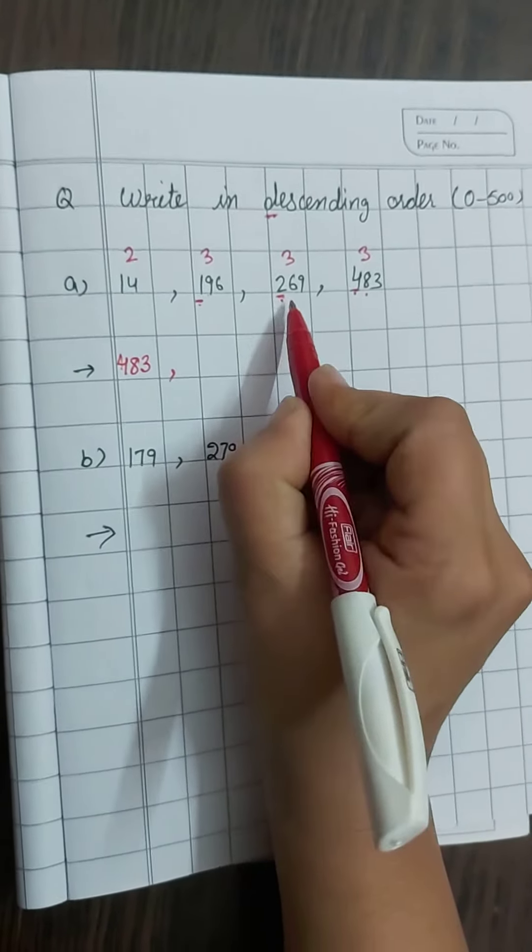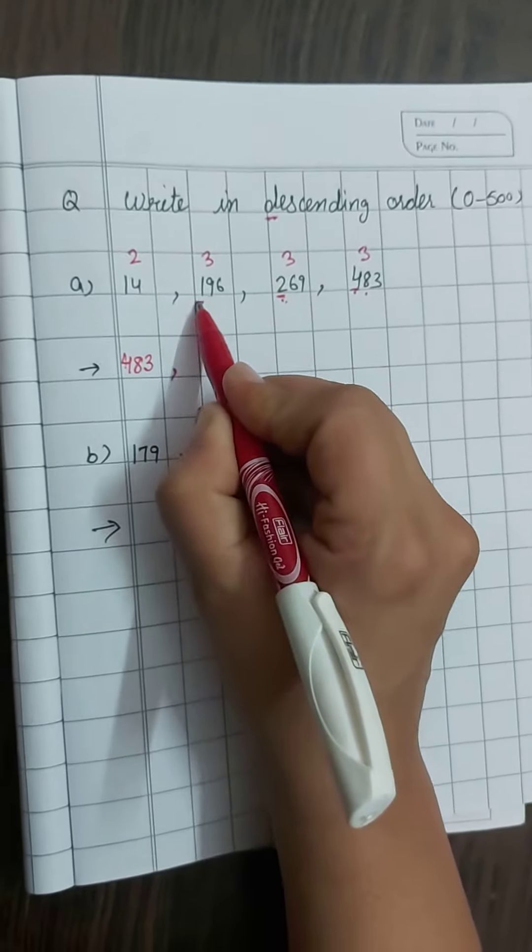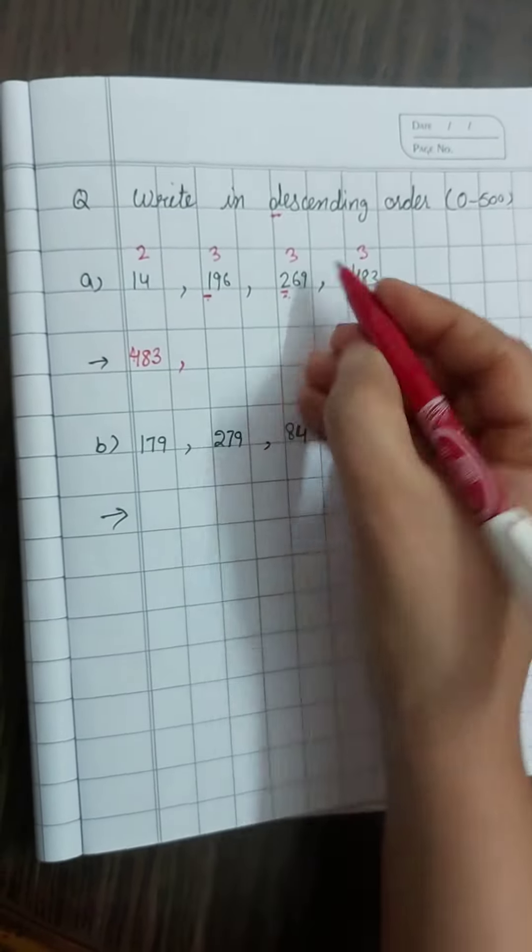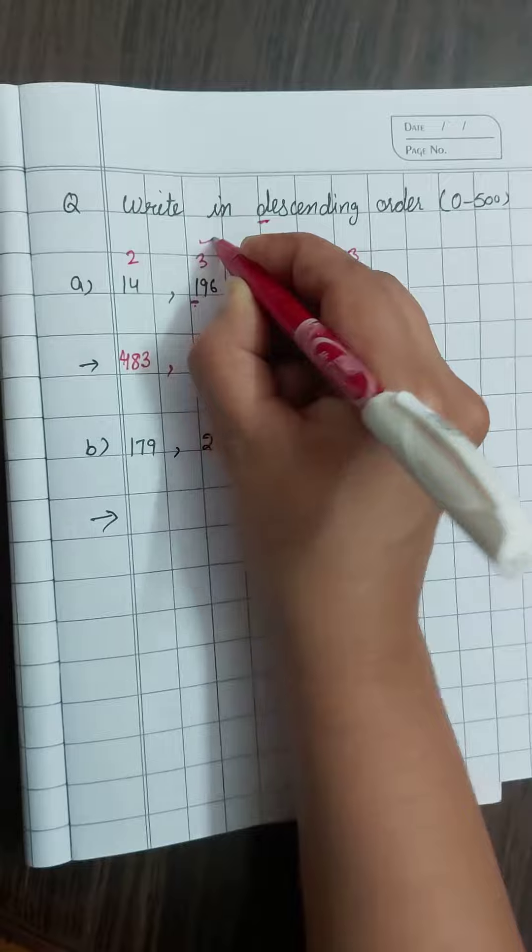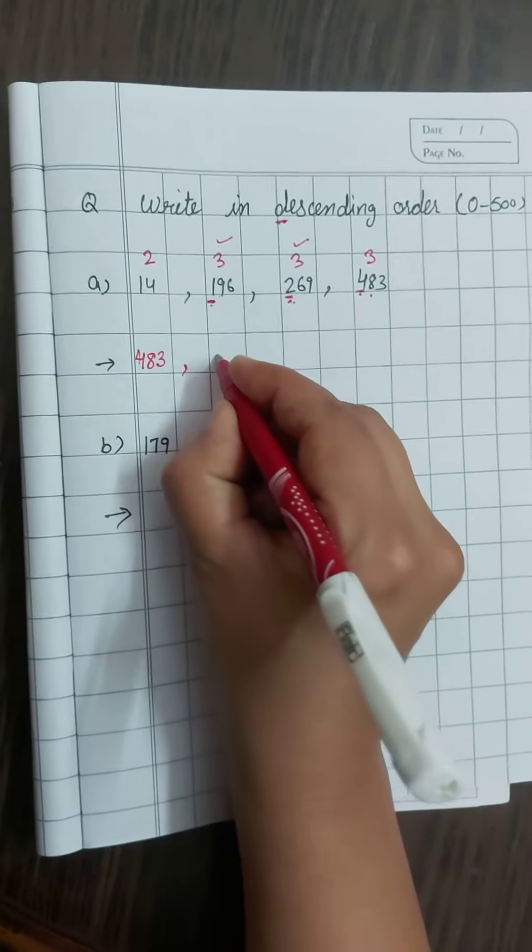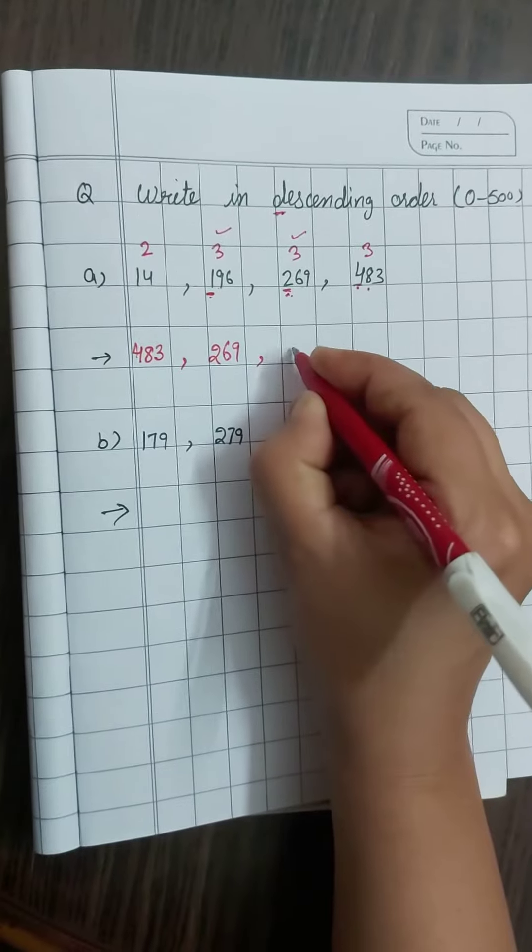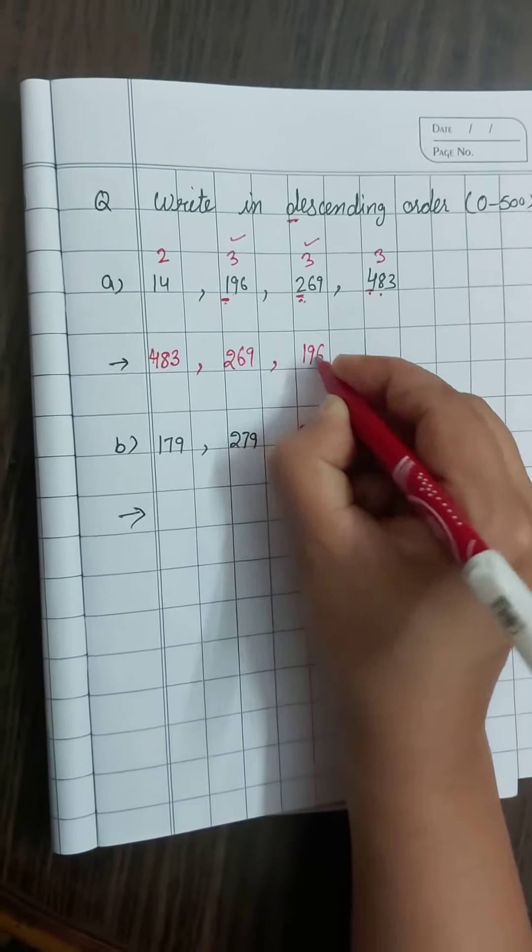Aur 196 aur 269 mein. First digit is one, first digit is two. To ye bigger ho gaya, ye smaller ho gaya. To hum likhenge two hundred, sixty nine, then one hundred ninety six.